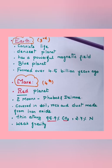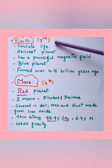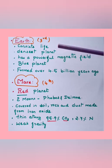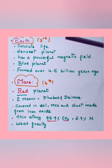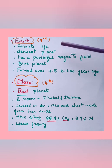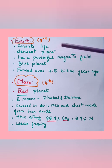Earth is the third planet of the solar system and the only planet which consists of life, because it possesses all the necessary conditions for life to exist. The earth is the densest planet in the solar system, has a powerful magnetic field, is called the blue planet, and was formed approximately 4.5 billion years ago.